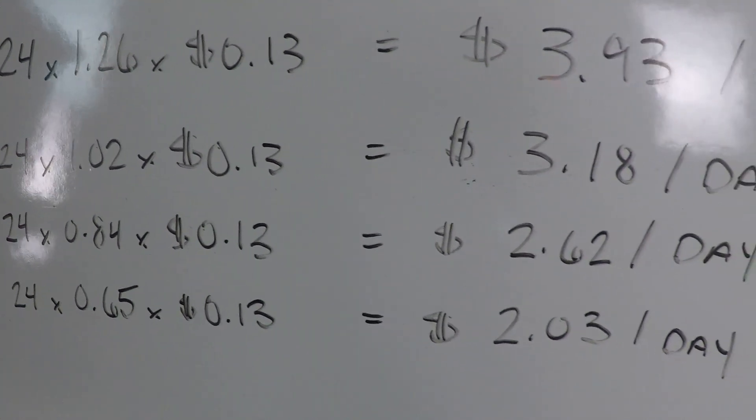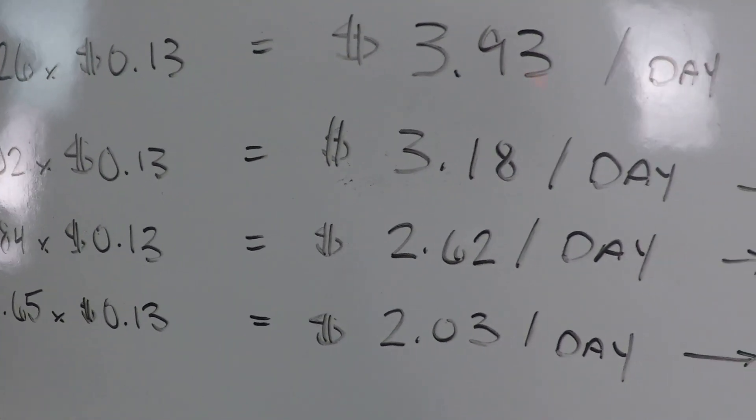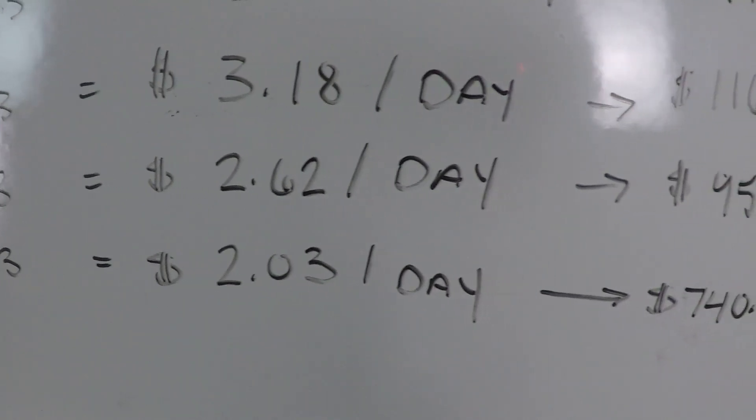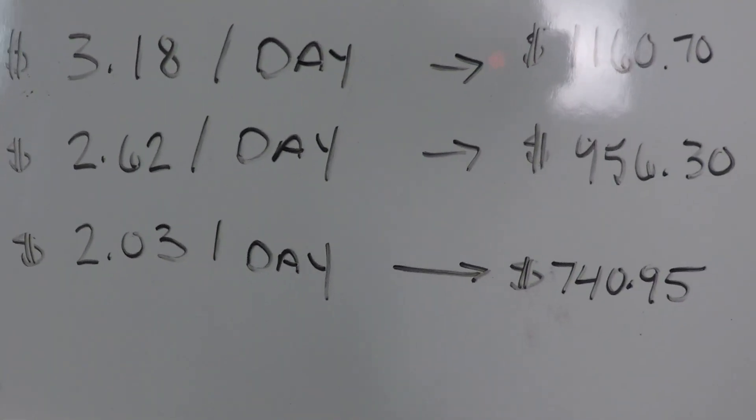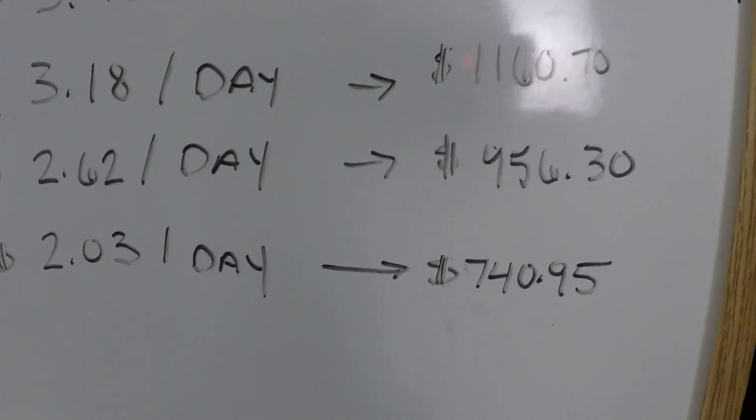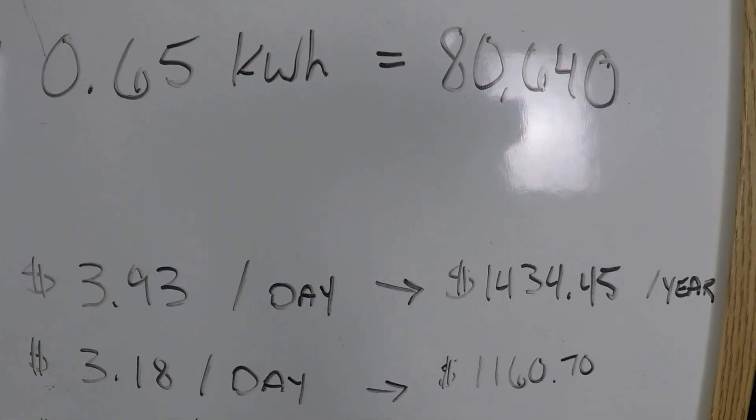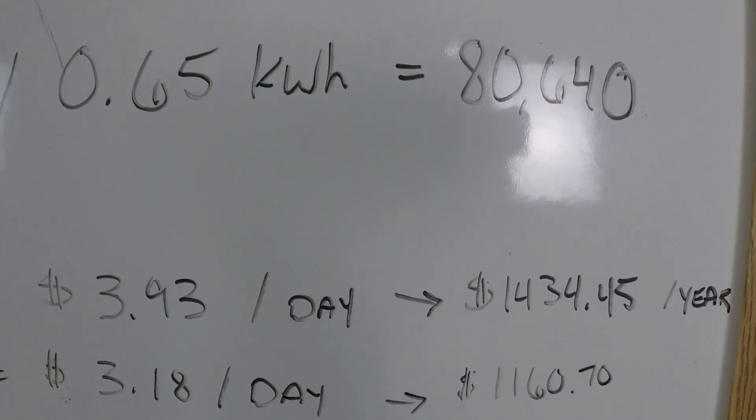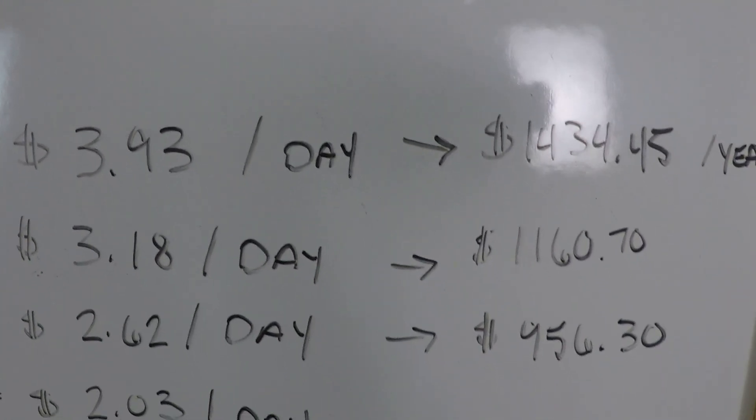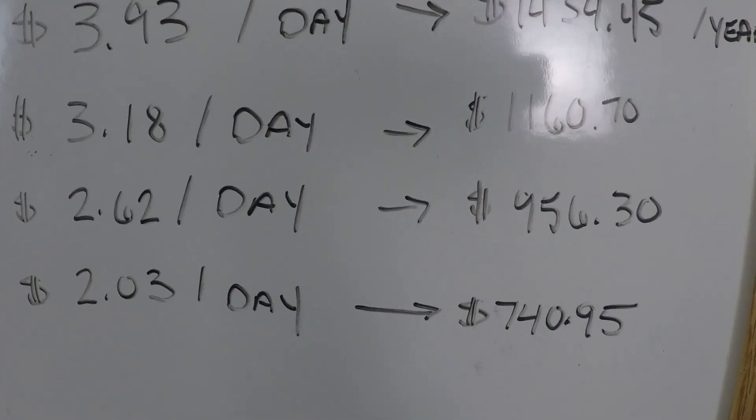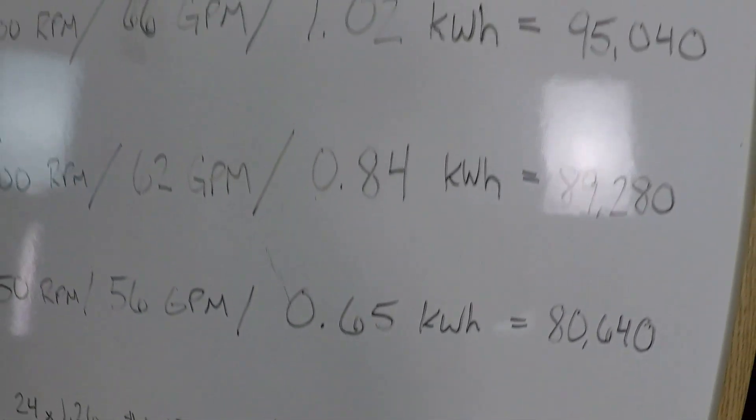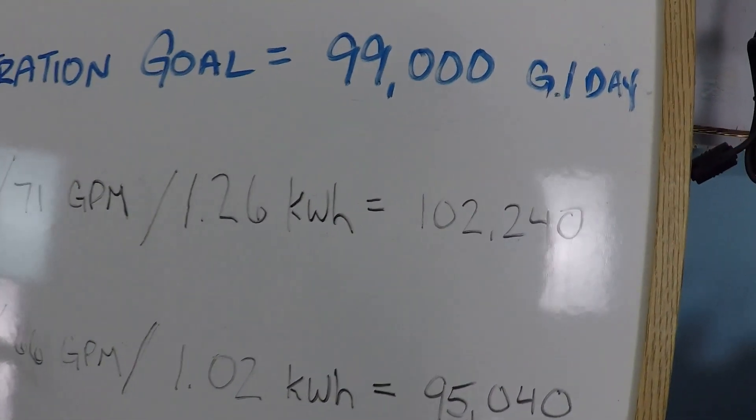Look at that bottom equation, 24 times 0.65 kilowatts times 0.13, and that's the price per kilowatt hour nationwide average, $2.03 per day, almost $741. But that's down from the 1434, that's almost half. You've cut the operational cost in half by going from 3450 to 2750.